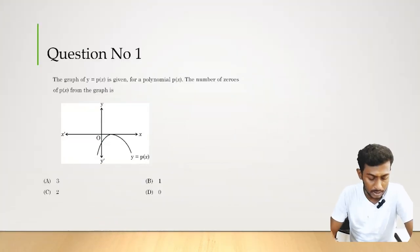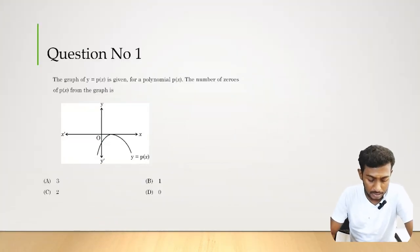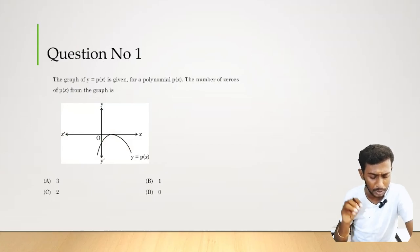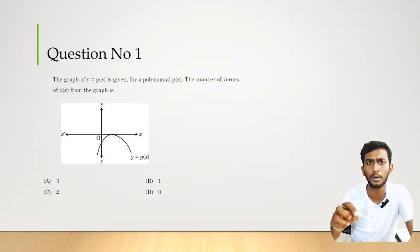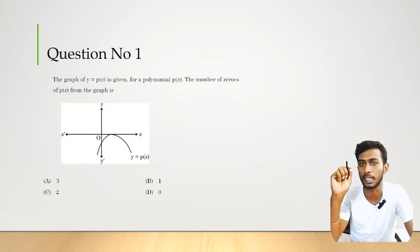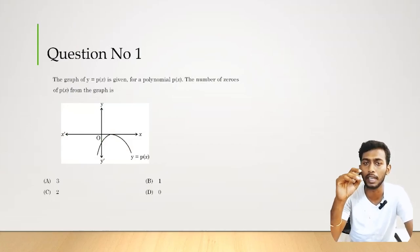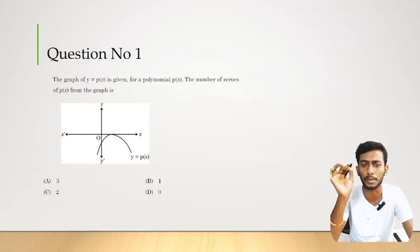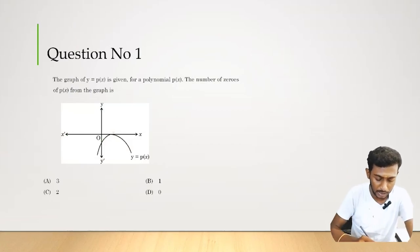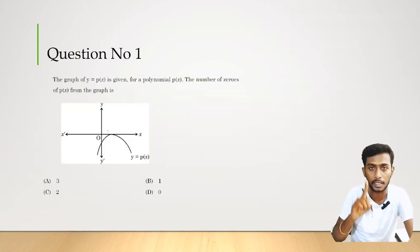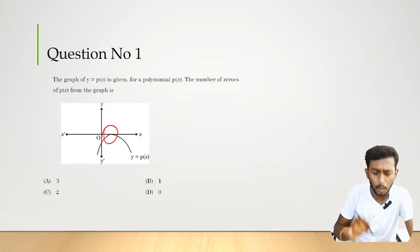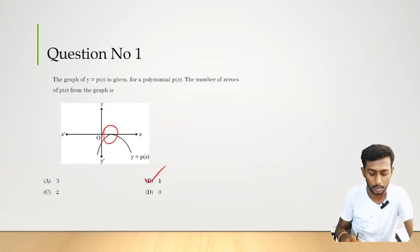The graph y is equal to p of x is given. For a polynomial p of x, the number of zeros of p of x from the graph is given. It is very simple. The graph will touch the x-axis level — that is the number of zeros. If the graph touches the x-axis in one place, the number of zeros is 1. Option B, 1 is the answer.